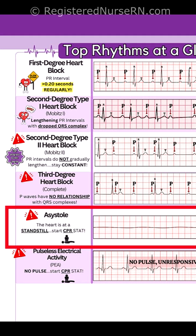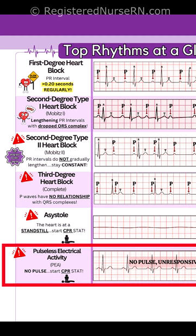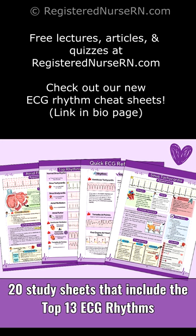Asystole: the heart is at a standstill, so start CPR stat. And PEA: there is no pulse — start CPR stat.